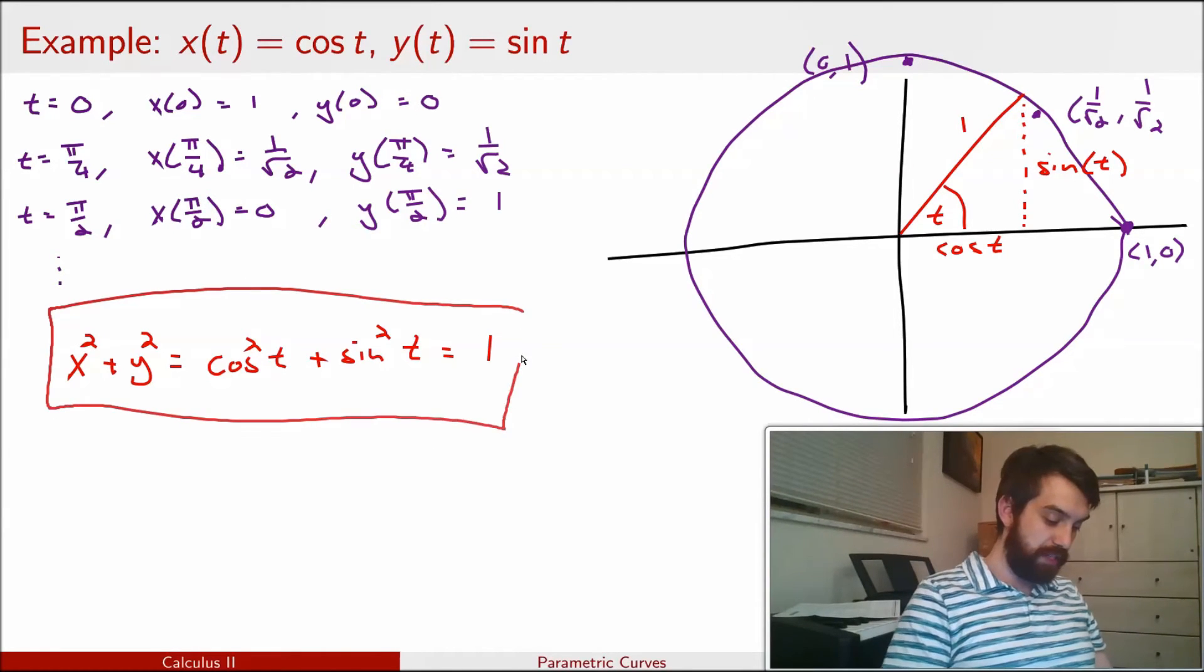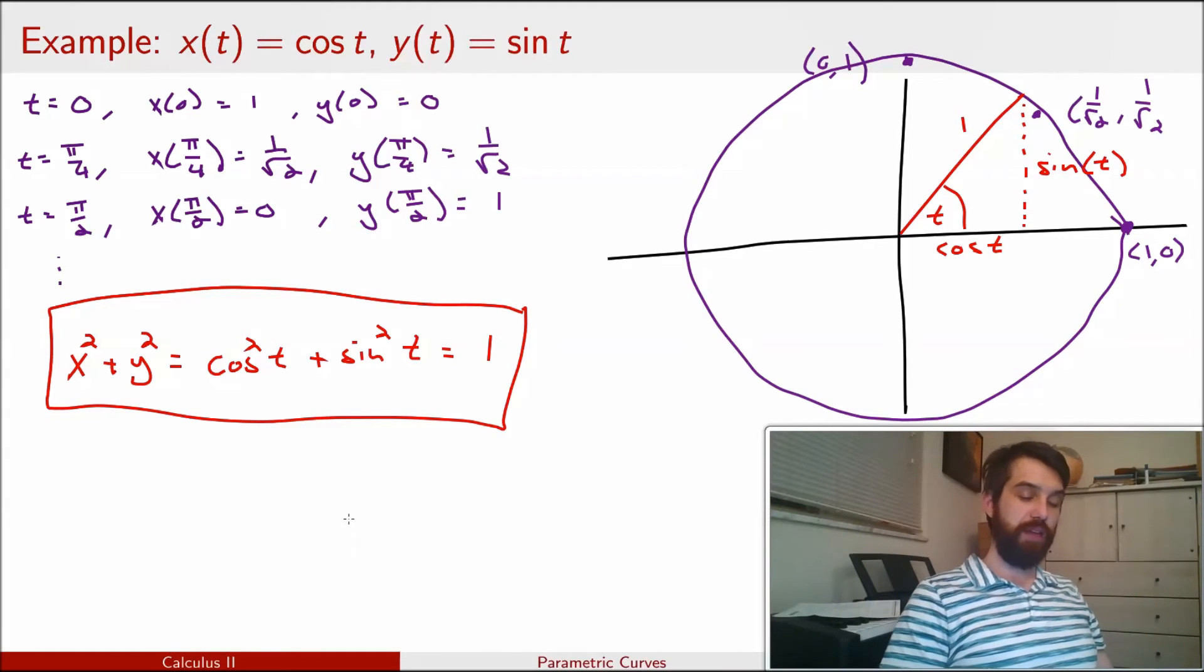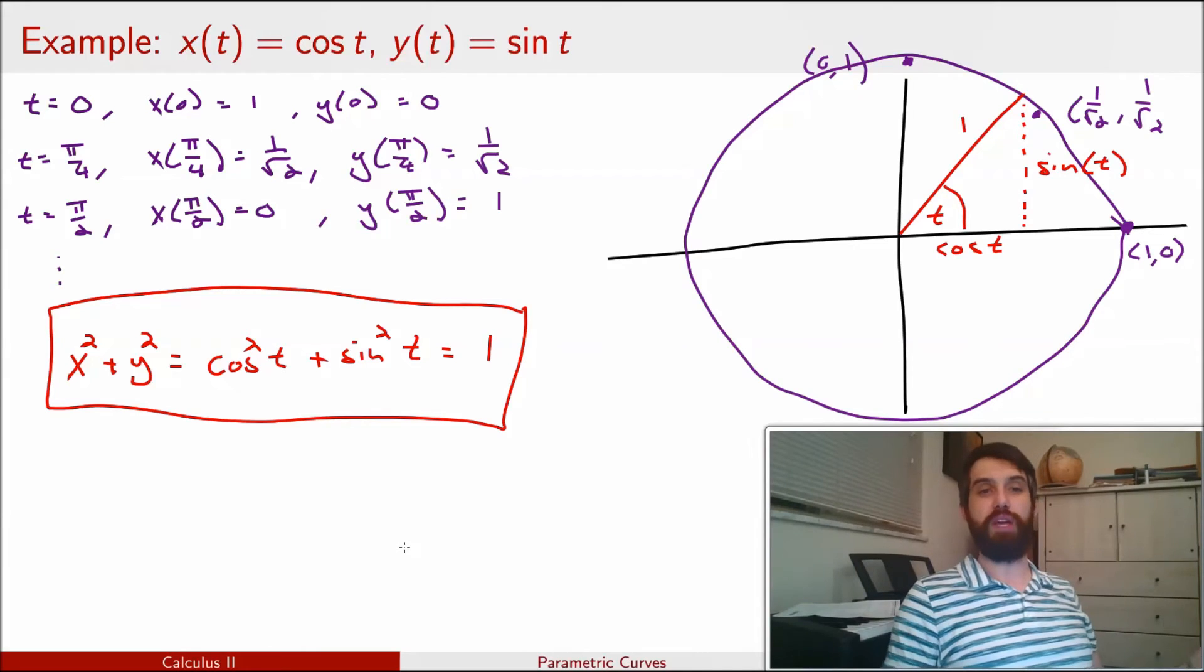So x squared plus y squared is equal to 1, and this is the equation of a circle. So however we want to think about it, this particular parametric curve graphs out a circle.